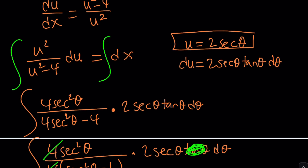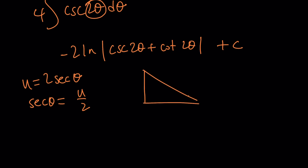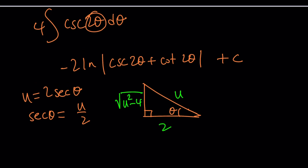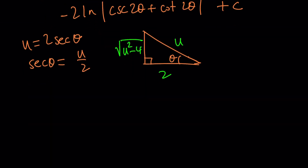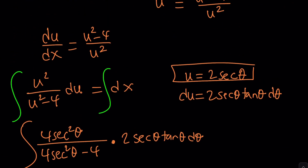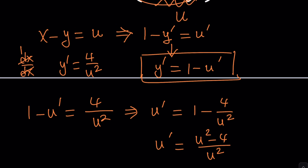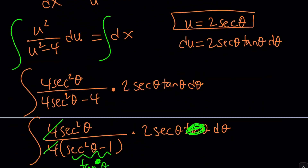How do you back substitute? What is theta and u and how are they related? Well, u is equal to 2 secant theta, so we can write secant theta as u over 2, and then draw a right triangle. Secant is 1 over cosine, so cosine would be 2 over u. From the Pythagorean theorem, the opposite side should be the square root of u squared minus 4, which explains the substitution. From here you're going to have to find cosecant and cotangent in terms of u — if you do it, you'll be able to get there. I'll leave it as an exercise for you. Once you find the answer in terms of u, you need to replace u with x minus y, and then it'll give you the solution.